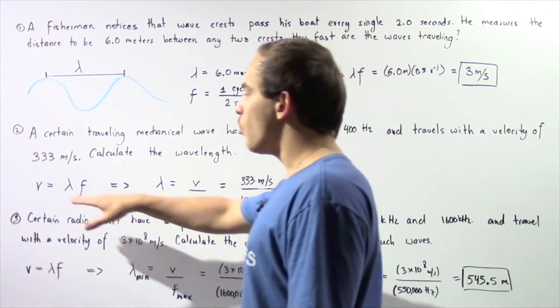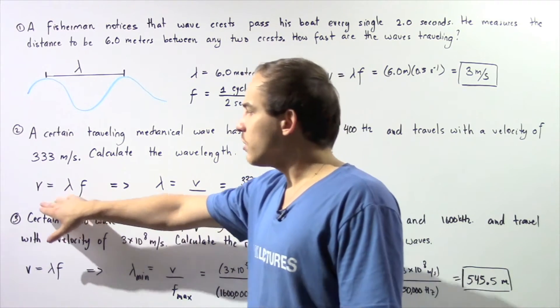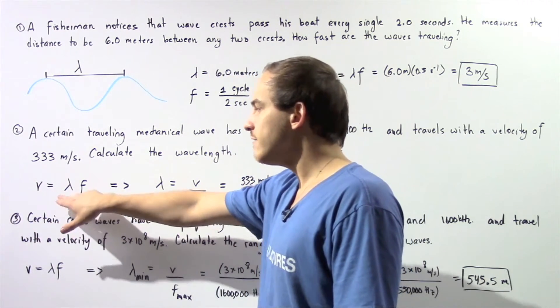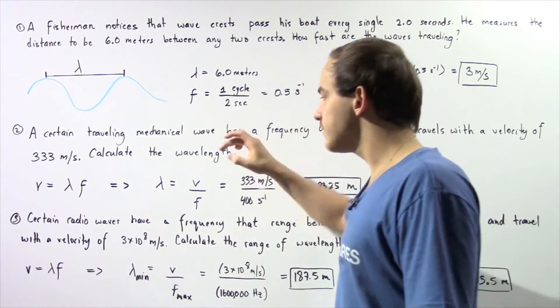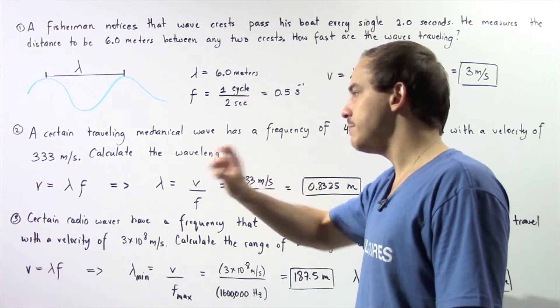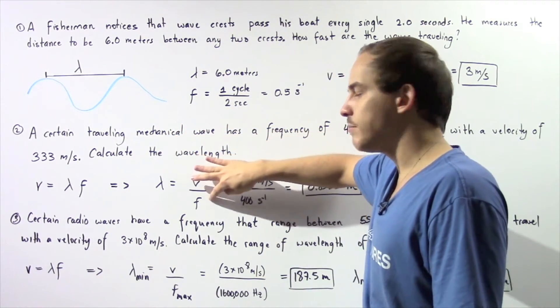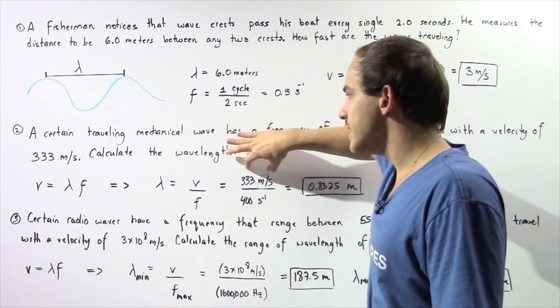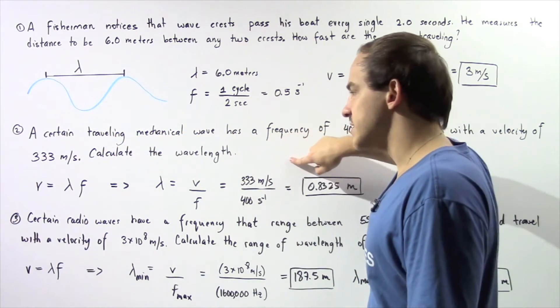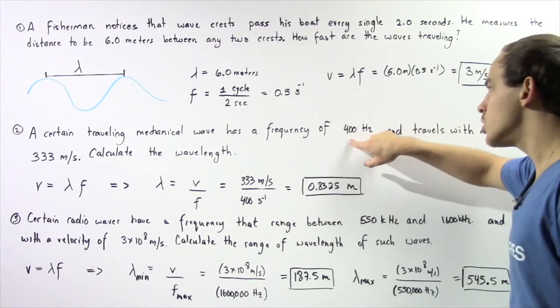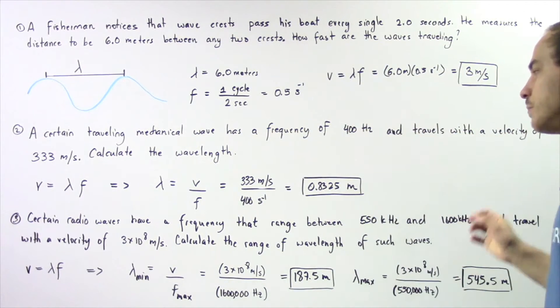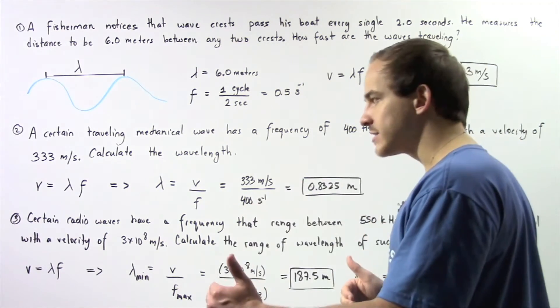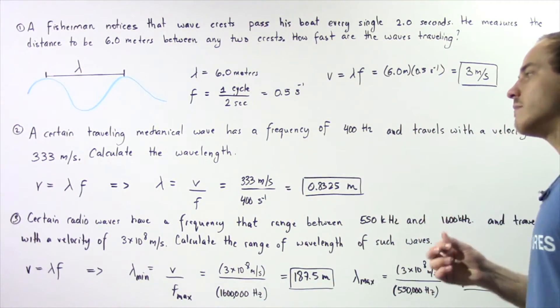So once again, we want to use the following equation. We know the velocity, we know our frequency. So if we rearrange our equation and solve for the wavelength, we get the following formula. The wavelength given in meters is equal to the velocity divided by the frequency. So we know the velocity is 333 meters per second and we know the frequency is 400 hertz. So that means 333 divided by 400 gives us 0.8325 meters is the distance from one crest of the wave to the next consecutive crest of that wave.